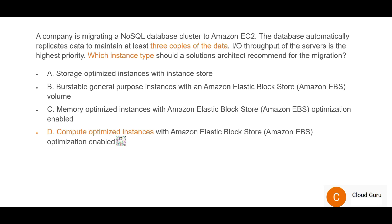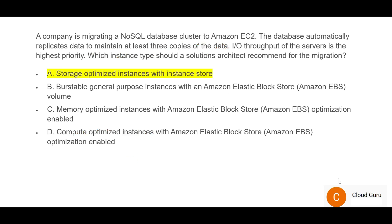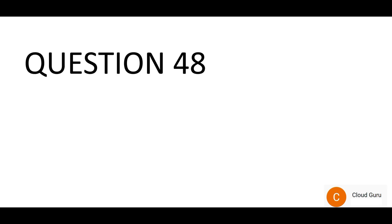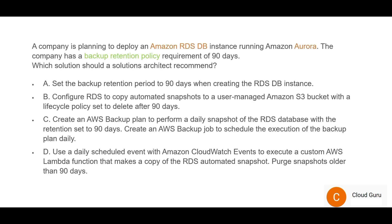Compute-optimized instances are very helpful if you are running batch processing — for example, a variety of ETL jobs where the entire window takes four hours. Compute-optimized instances will work well because all compute is available at their disposal. But in this problem there is no mention of any such batch processing; it's just talking about creating three copies of data, which is totally linked with storage. Hence D is wrong. We'll lock this answer and move forward.